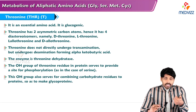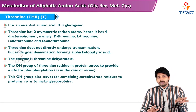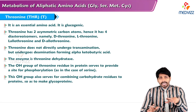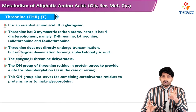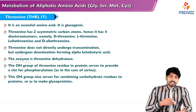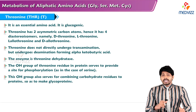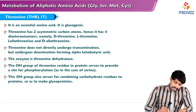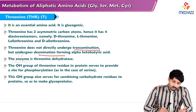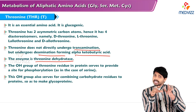Threonine is an essential amino acid, so we do not discuss its synthesis in the body — only its catabolism. Once threonine enters the body via diet, we can study its fate. It is glucogenic, like serine. Threonine has two asymmetric carbon atoms and four diastereoisomers: D-threonine, L-threonine, L-allothreonine, and D-allothreonine. Threonine does not directly undergo transamination but undergoes deamination to form alpha-ketobutyric acid; the enzyme is threonine dehydratase.